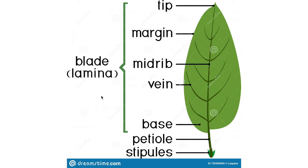Let's discuss the different parts of a leaf. A leaf is usually green because of the presence of chlorophyll. The flat blade-like structure of the leaf is called the leaf blade or lamina. The pointed corner part is called the tip or apex. The sides are called the margin. The middle thick vein is called the midrib, while the smaller side veins are called veins or side veins.